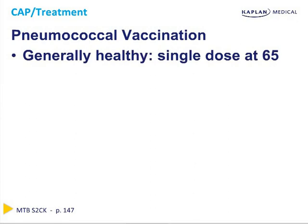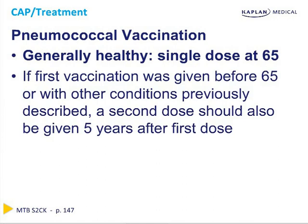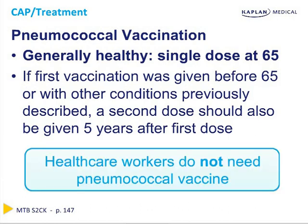In patients who are generally healthy, they can be given a single dose at age 65. If the first vaccination was given before 65, or with the other conditions previously described, then a second dose should also be given five years after the first dose. Importantly, healthcare workers do not need the pneumococcal vaccine. This concludes our lecture on community-acquired pneumonia.